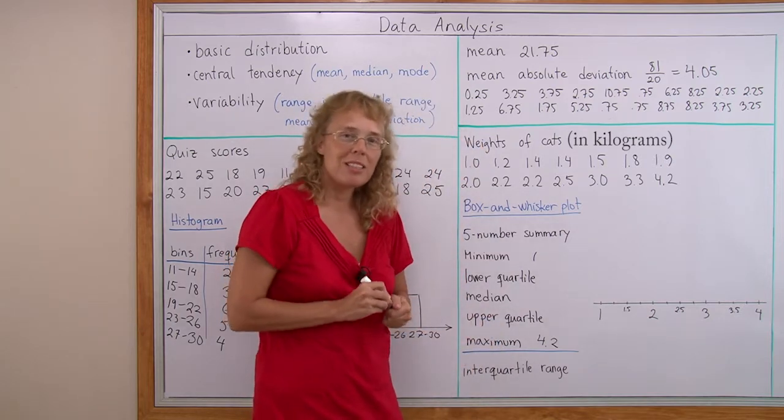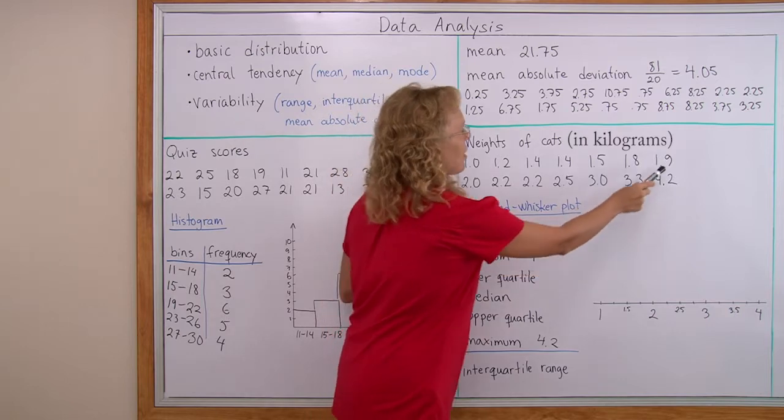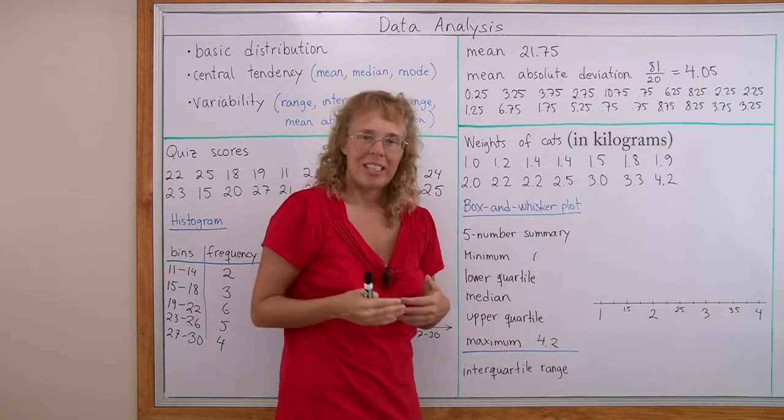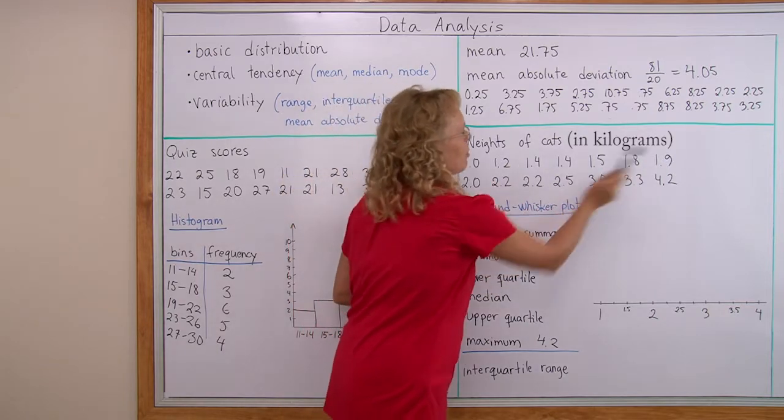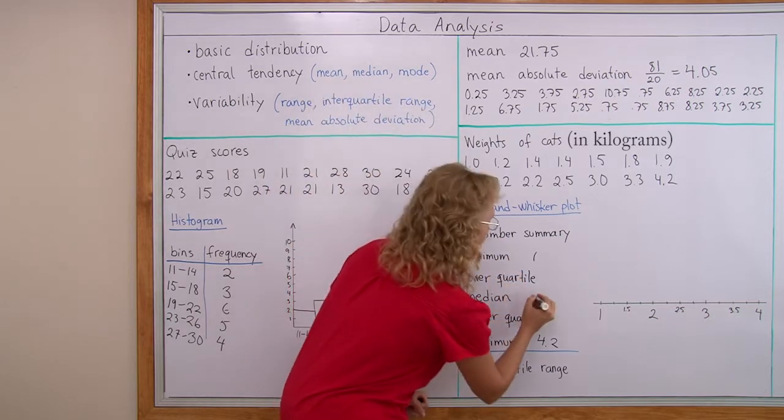Median, you remember, is the middle-most number in the data set, so that would be exactly between these two. So then we take the mean of them or the average, the exact midpoint between 1.9 and 2.0, which would be 1.95.